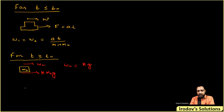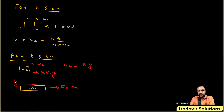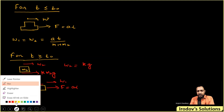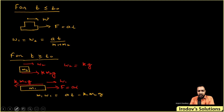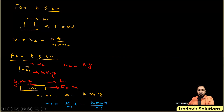For m1 (the plank), the FBD shows the time-varying force F = at acting forward, and the reaction of kinetic friction km2g acting backward. Applying Newton's second law: m1·w1 = at − km2g, so w1 = (a/m1)·t − km2g/m1.